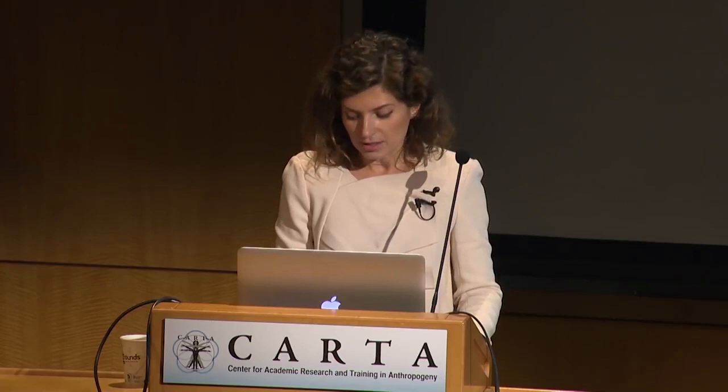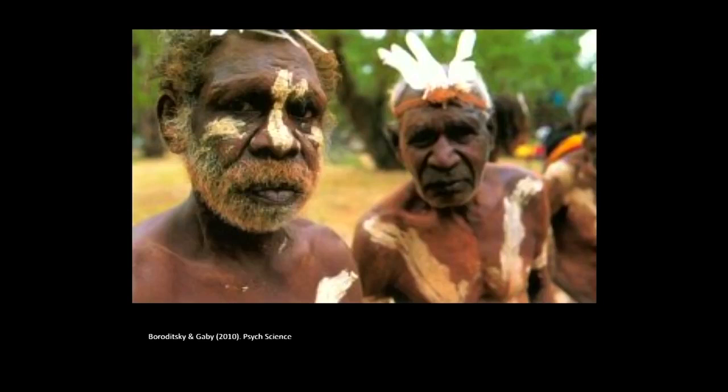So far I've given examples of how time can travel with respect to the body — either left to right or right to left. But it can also travel not with respect to the body at all. This is an Aboriginal community in Australia, the Kuuk-Thaayorre people, who live on the edge of Cape York. What's interesting is they don't use words like left and right; instead, they primarily rely on cardinal direction terms — north, south, east, and west.